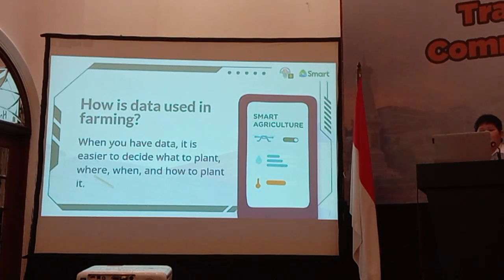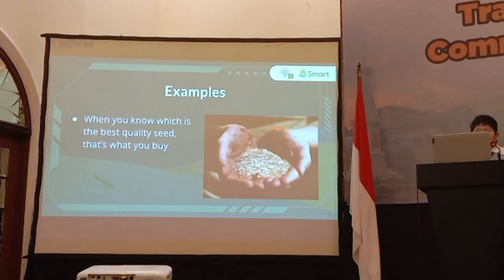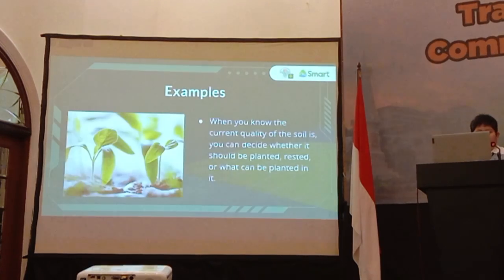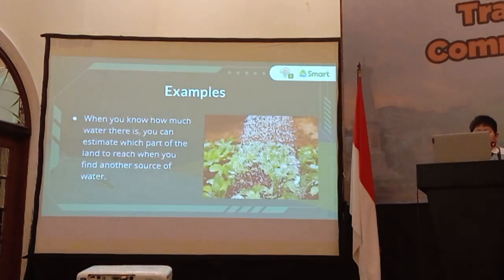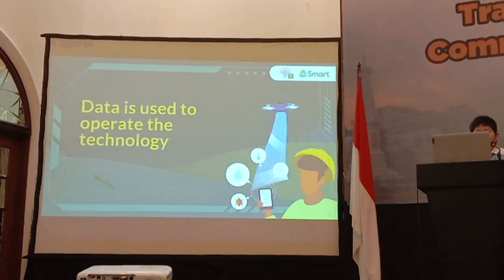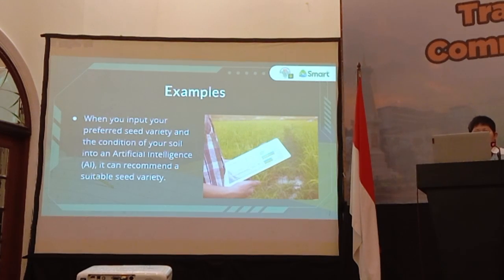When we have the data, it is easier to decide what to plant, where, when, and how to plant it. When we know which is the best quality seed, that is what the farmers buy. When we know the current quality of the soil, farmers can decide whether it should be planted, rested, or what can be planted. When the farmer knows how much water is available, he can estimate which part of the land to irrigate. Data is also used to operate technology — for example, inputting preferred seed variety and soil condition into an AI to get seed recommendations.